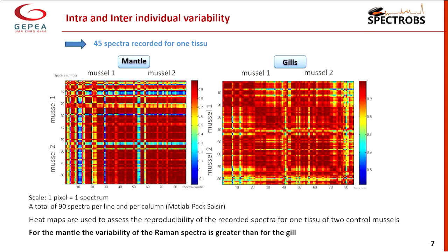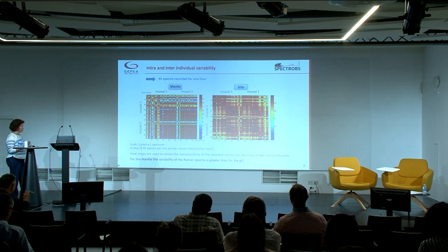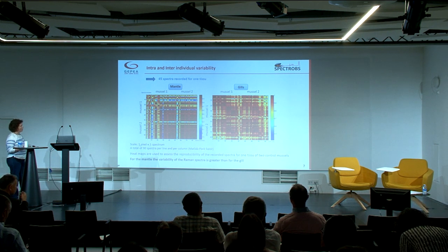The first question we had was: what is the variability of the spectra — whether for the same individual, the same tissue, or for the same tissue type coming from individuals under the same exposure condition? Here you have the recorded spectra for two mussels, two control tissues — mantles and gills. To analyze the data, we used a heat map. As you can see on the heat map, the variability in gills is less than in mantle. In the mantle, there is higher variability in the spectra both within one tissue of the same organism and across two organisms.